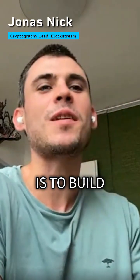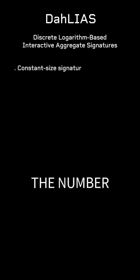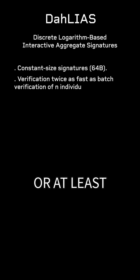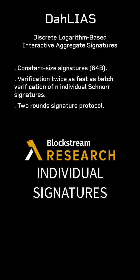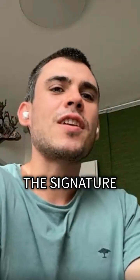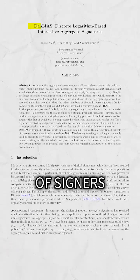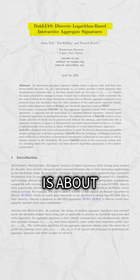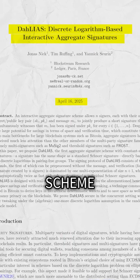What we are interested in is to build something more efficient where the signature size does not depend on the number of signers — ideally, or at least the signature size is smaller than the concatenation of the individual signatures. In DAHLIA'S, the scheme we published, the signature is constant size, so it does not depend on the number of signers, and verification is about twice as fast as the trivial aggregate signature scheme.